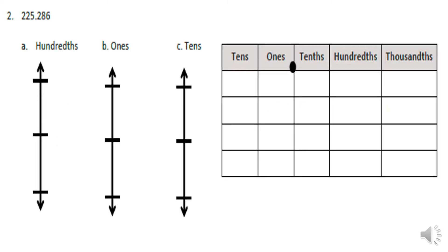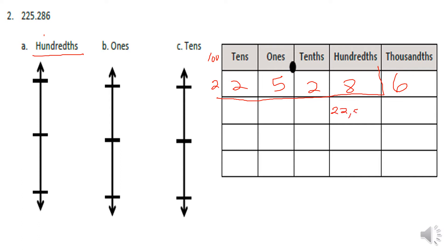Here we have 225 and 286 thousandths. First, I'm going to add a hundreds place so I can write the number in. We have 225 and 286 thousandths. The first problem says we're going to be rounding to the hundreds, so I'm going to take unit form to the hundreds, meaning I read the whole number to the hundreds place.